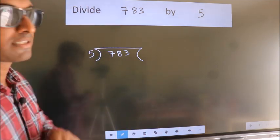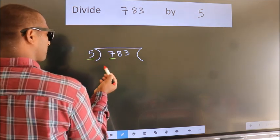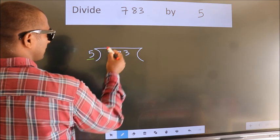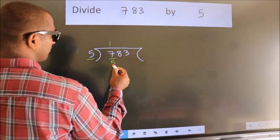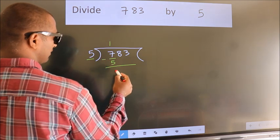Next, here we have 7. Here 5. A number close to 7 in the 5 table is 5 once 5. Now we should subtract. We get 2.